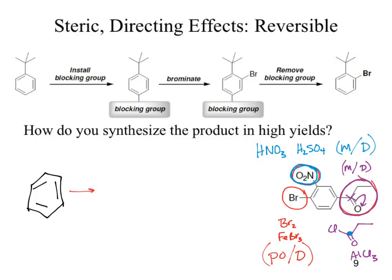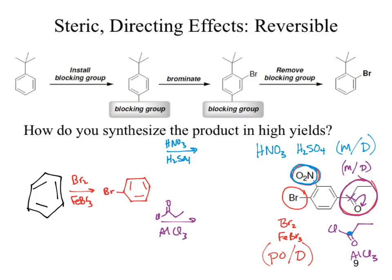So if we drop our bromine on first with our Br2 and our iron tribromide catalyst — now what do we do? We've got an interesting conundrum here. We could run with the nitro group first, or with our acyl group, and then by natural segue that would leave the next piece to go on at the last step. So those are now our two options.